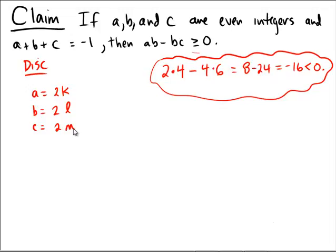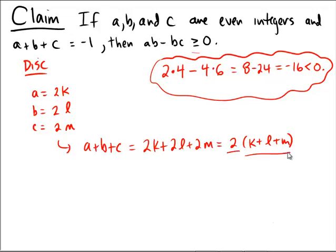Then, what would that imply? Well, then a plus b plus c would have to be 2k plus 2l plus 2m, which is two times k plus l plus m. But this right here, since it's two times an integer, would be an even integer.